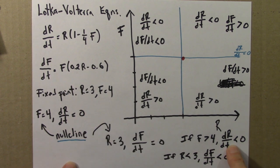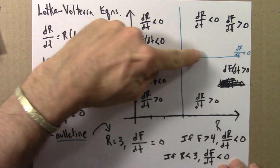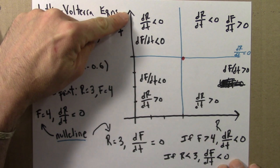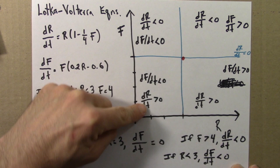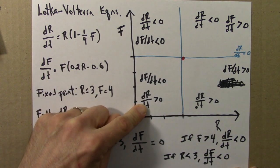Then, looking at things from the point of view of the rabbits, this says if I'm above this line, there are more than 4 tons or 4 units of foxes, the rabbit population decreases. If I'm below this line, the rabbit population increases.